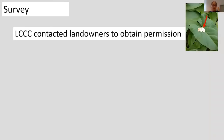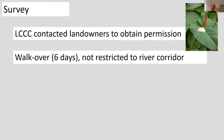Limerick City and County Council contacted landowners to obtain permission and had permission from all landowners along the river — about 27 kilometres of river, 54 kilometres of riverbank. The survey was done by walkover and took six days. We didn't restrict it to the river corridor, which we estimated as between 15 and 20 metres out from either bank. We followed all the tributaries down from source and went through various landowners' fields to make sure there was no hogweed further out of the corridor.